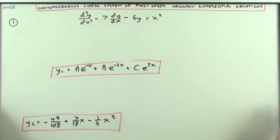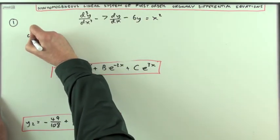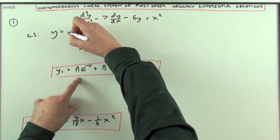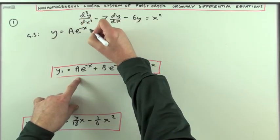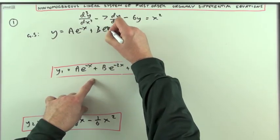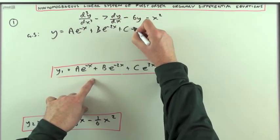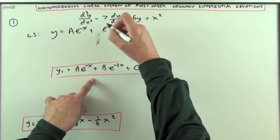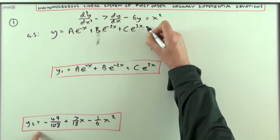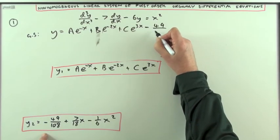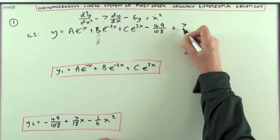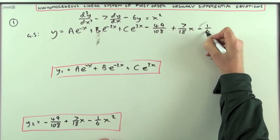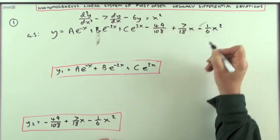Clear away the clutter and you have the general solution: y equals ae to the negative x, plus be to the negative 2x, plus ce to the 3x — or call them c1, c2, c3 if you wish — minus 49 over 108, plus 7 eighteenths of x, minus one sixth of x squared.